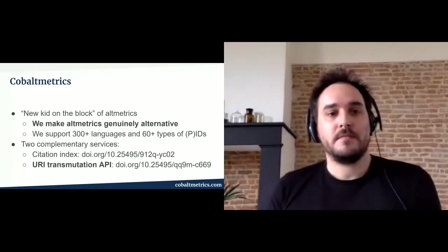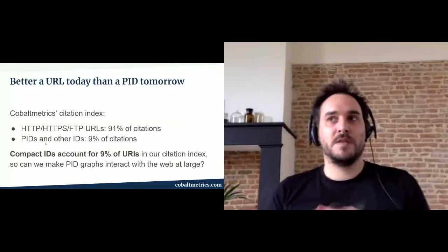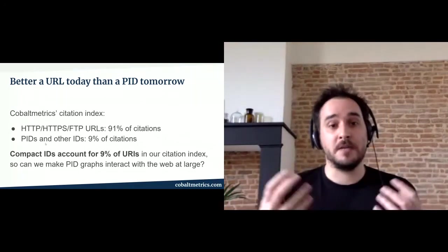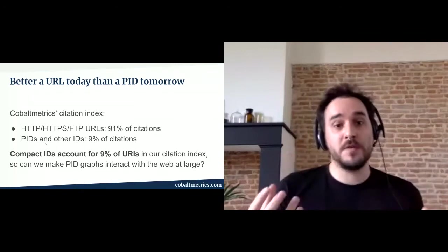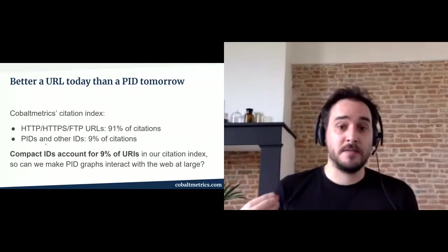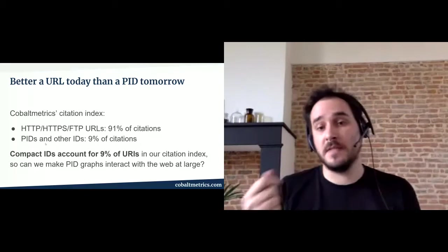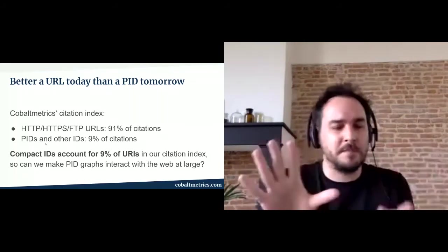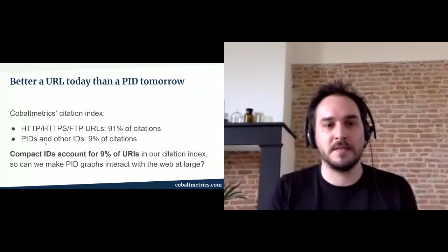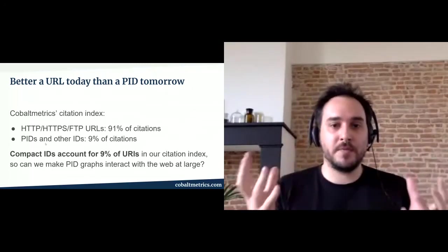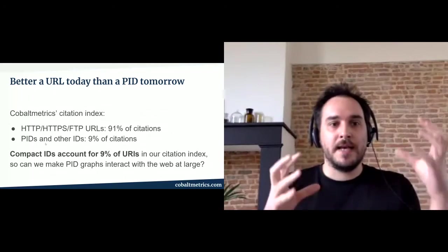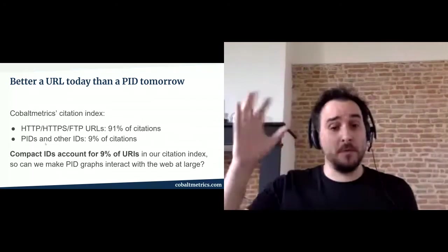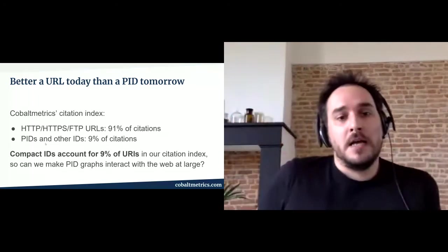What we're doing with COBOL Metrics: we've been described as the new kid on the block of altmetrics. We try to make altmetrics and citation metrics truly alternative and diverse. We support 300 different natural languages and 60-plus types of identifiers — not all of them are persistent, but I think that's important. There are two different services: the citation index and the ERA transmutation API. When we look at our citation index, 91% of the citations are not PIDs — they are URLs, HTTP, HTTPS, SFTP — while compact identifiers, which is not really the same thing as PIDs, only account for 9% of citations. So how do we make the PID graphs and all the nice resources in the scholarly community interact with the web at large?